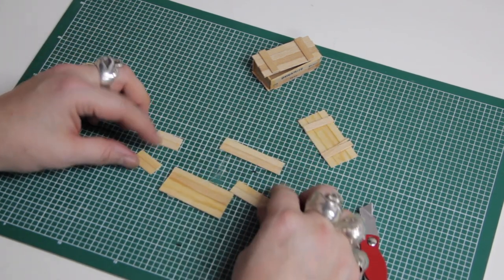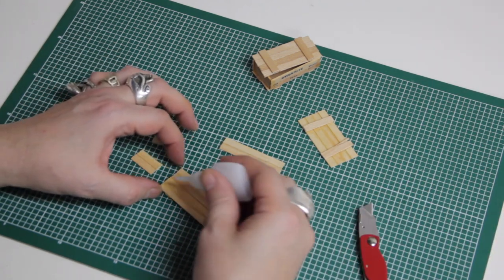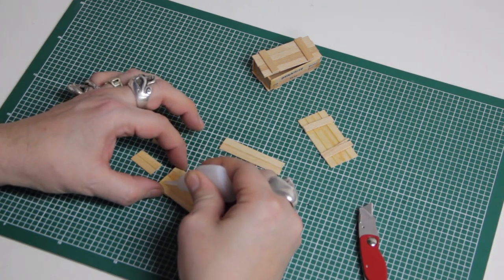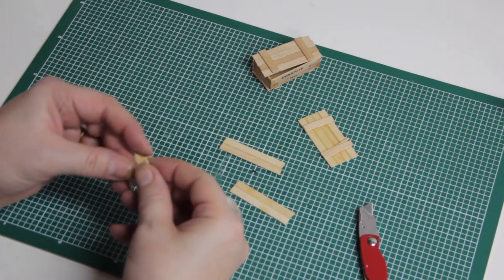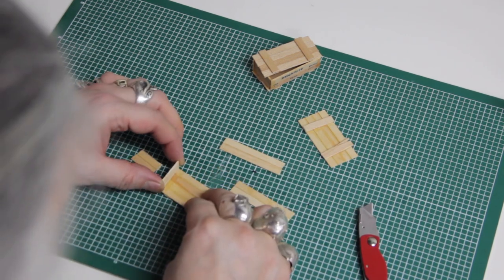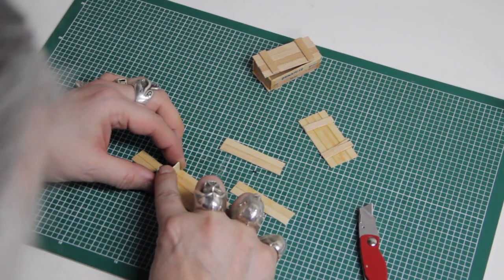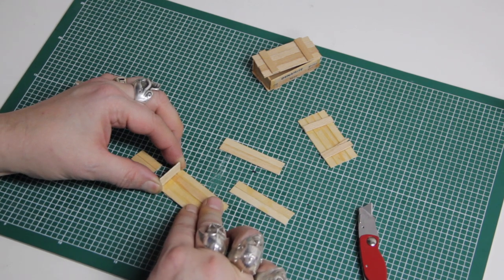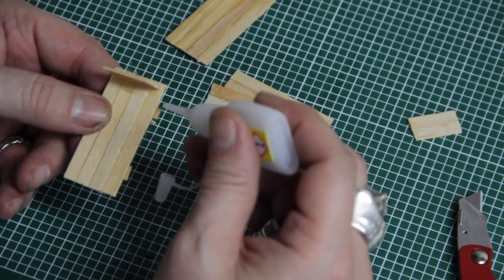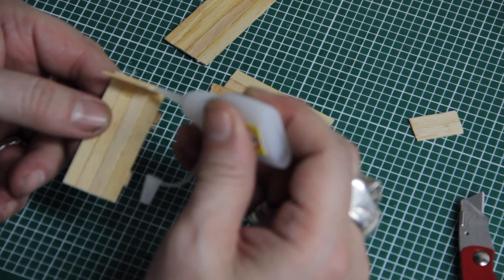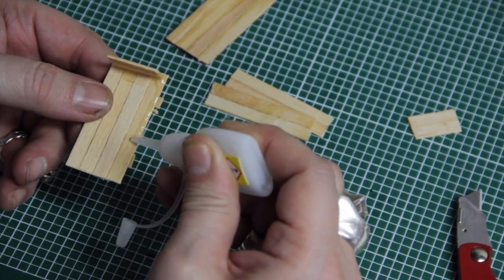Start with one piece. I usually start with an end piece. Just hold it in place until the glue takes. So once you get that first part in place, that helps the rest of it go together.